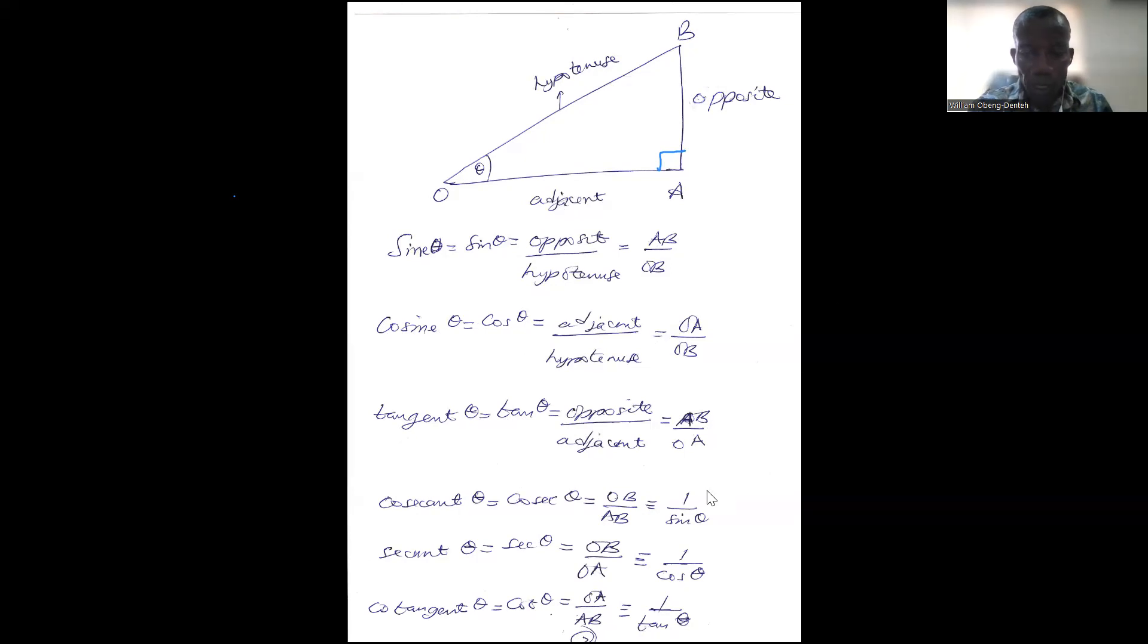And then we move on to the reciprocals. Cosecant theta (cosec theta) is OB over AB, and that is one over sine theta.